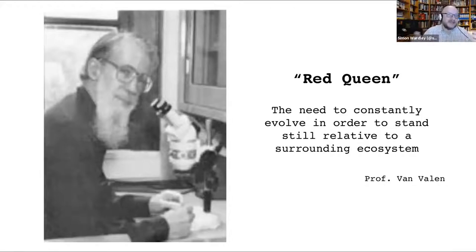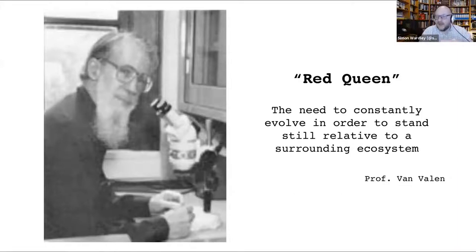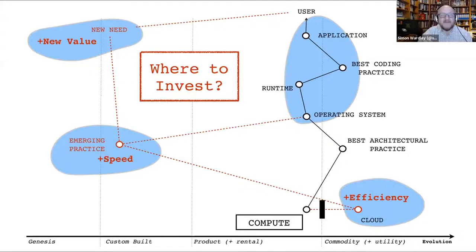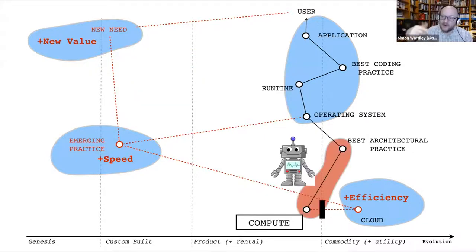This leads to the Red Queen effect — Professor Van Valen. If you're competing against others and somebody evolves and gains the benefits of speed, efficiency, and new value, it creates pressure on you to adapt. As more evolve, the pressure mounts. From an investment standpoint, mapping the environment showed where to focus money — cloud, back in 2006–2007 — emerging practices, new needs. More importantly, it also told him what not to invest in: no more data centres or compute as a product.